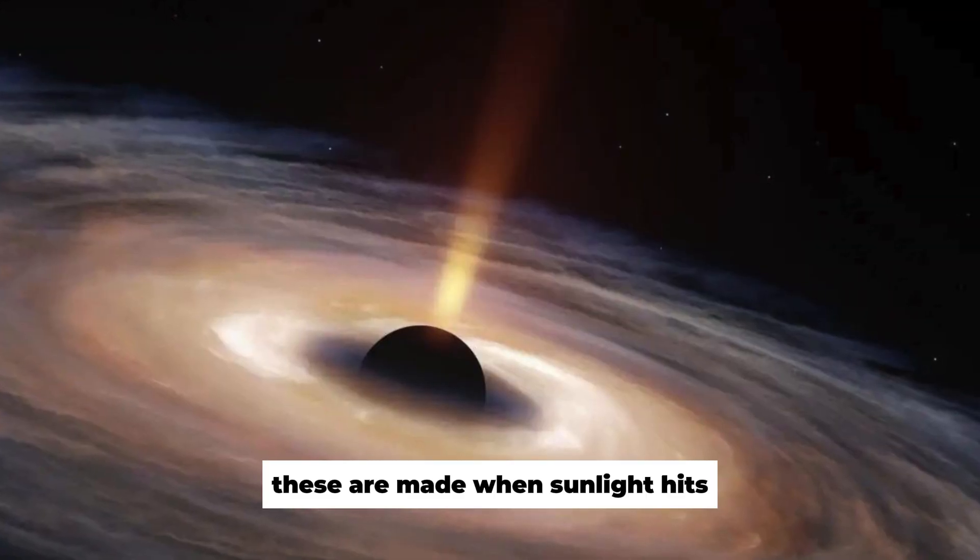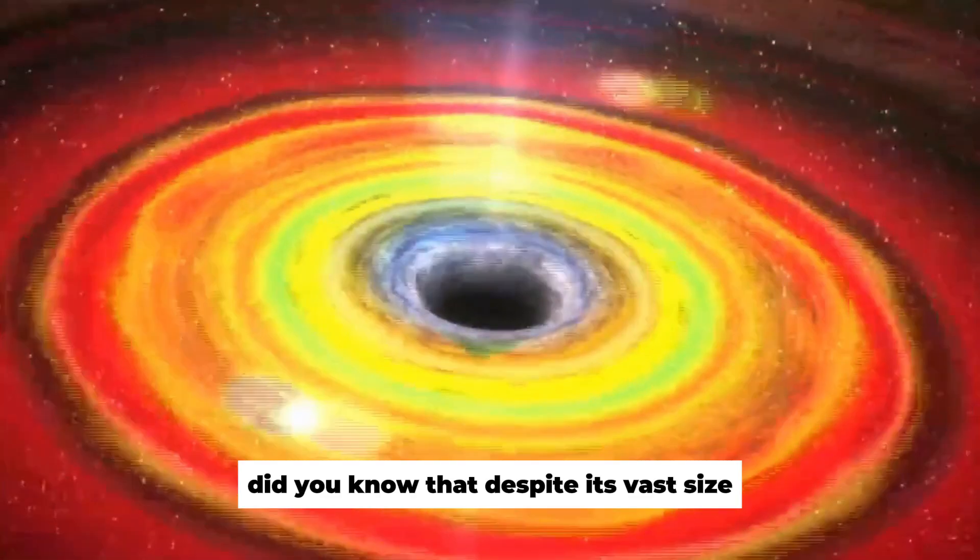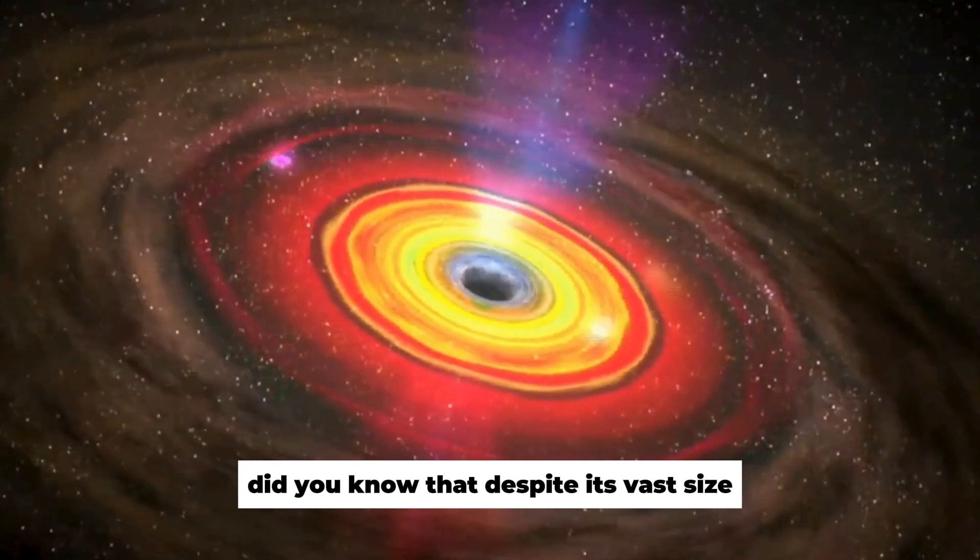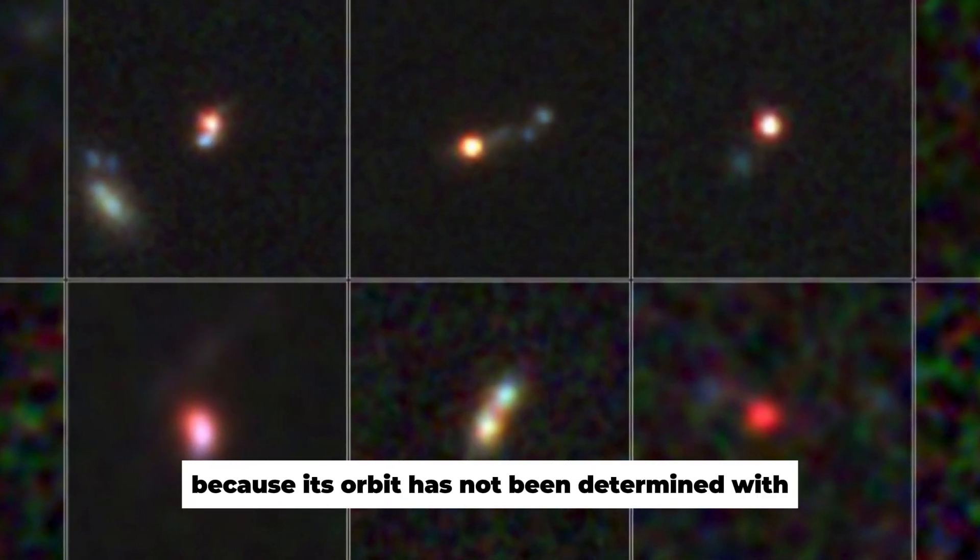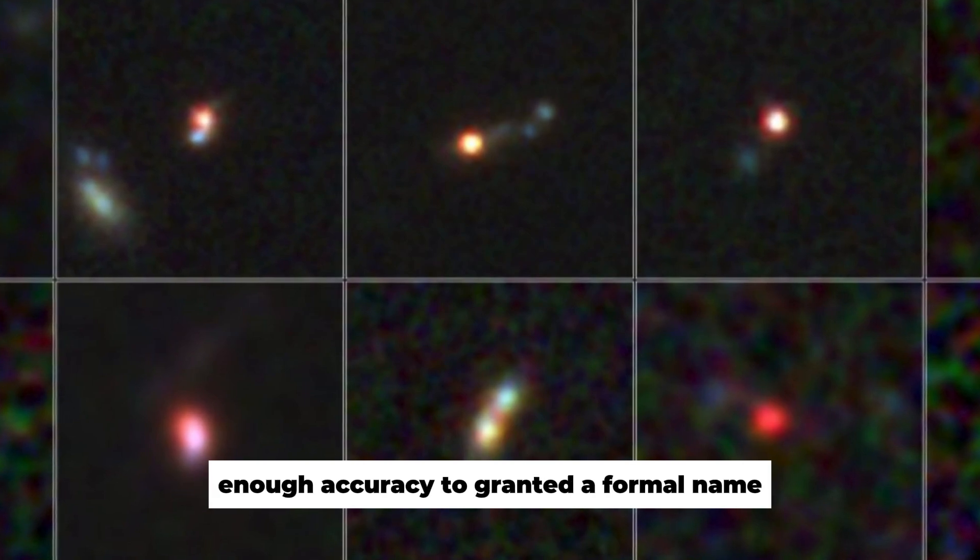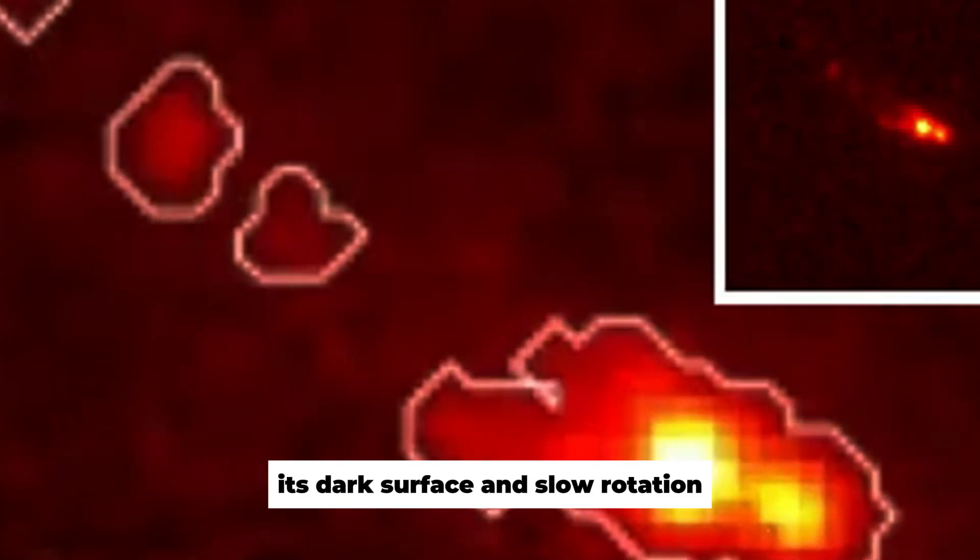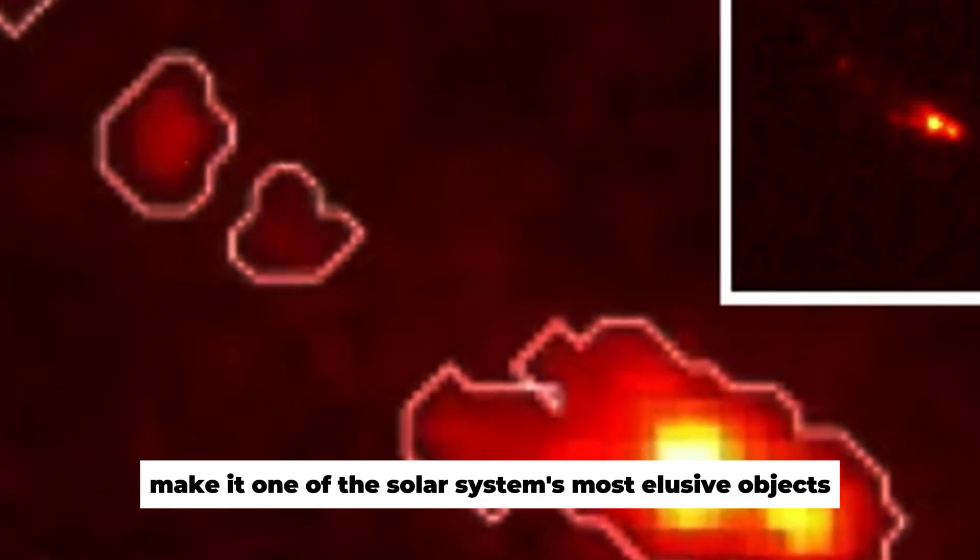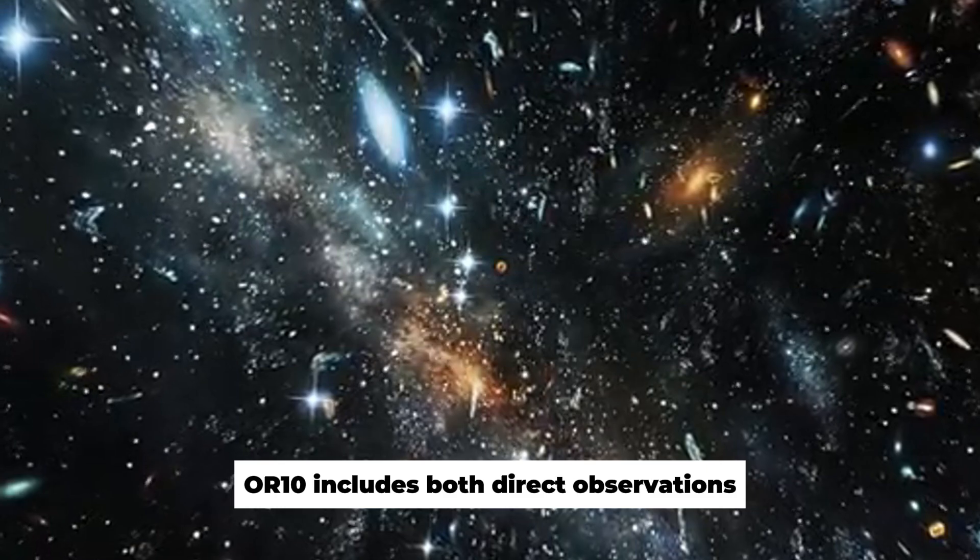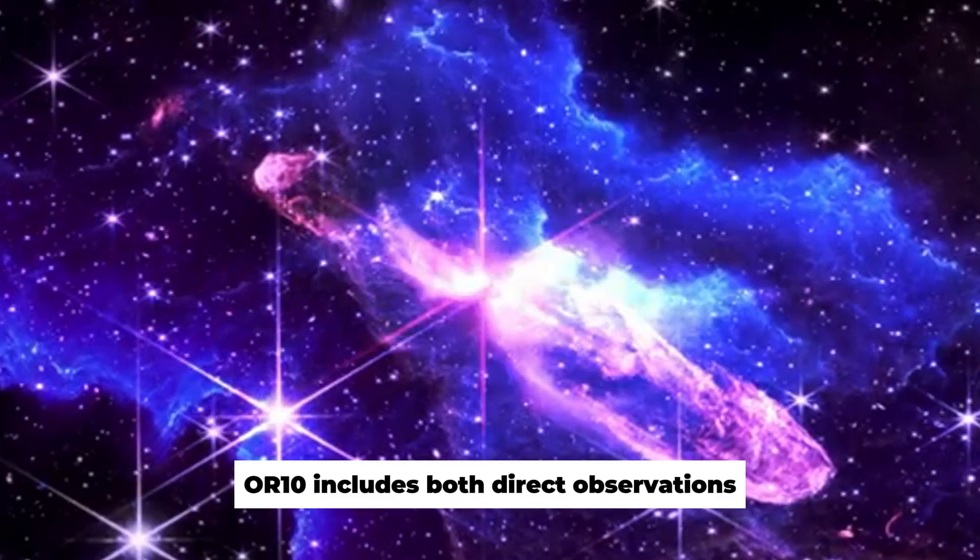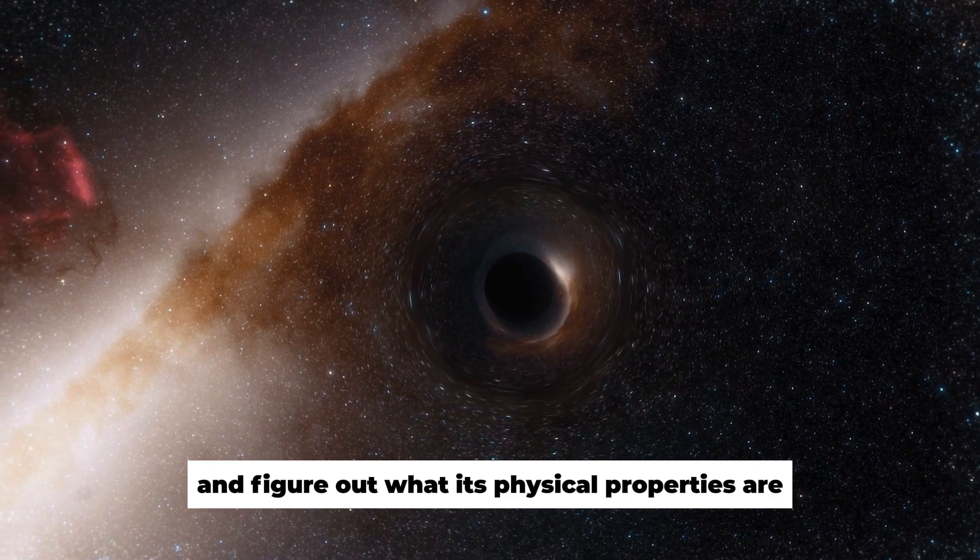These are made when sunlight hits simple organic compounds like methane and ammonia. Did you know that despite its vast size, 2007 OR10 remains unnamed because its orbit has not been determined with enough accuracy to grant it a formal name? Its dark surface and slow rotation make it one of the solar system's most elusive objects. The study of 2007 OR10 includes both direct observations and computer models that try to guess its path and figure out what its physical properties are.